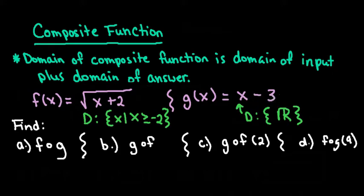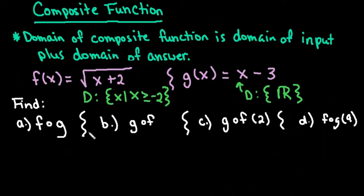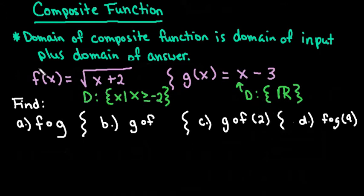For the first two, I'm going to find f of g of x and g of f of x, and I am going to state the domain. For the second two, I picked values that are already in the domain, so I can plug those values into the equation. For the first two, we're going to just leave it in terms of x.